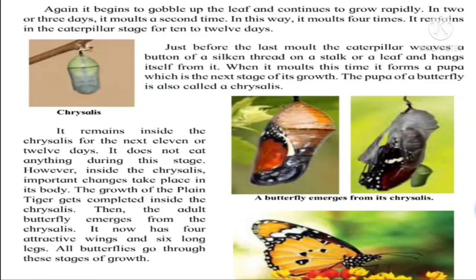Out emerges an adult butterfly — you can see a beautiful butterfly coming out of the chrysalis, the fourth stage of the life cycle. This butterfly has four attractive wings and six long legs. All butterflies go through these stages of growth. So we have four stages: egg (six to eight days), larva/caterpillar (molts four times), pupa/chrysalis (11 to 12 days, no eating), and then it comes out as a beautiful fully grown butterfly with six long legs and four attractive wings.